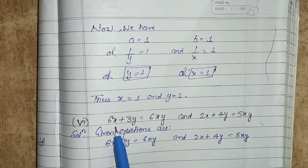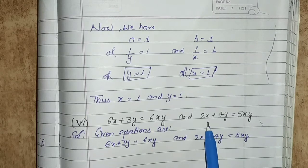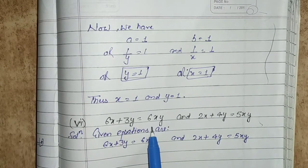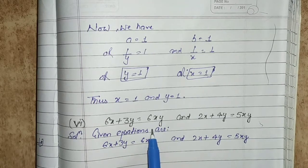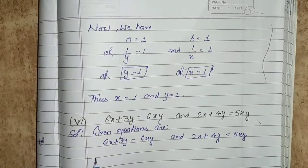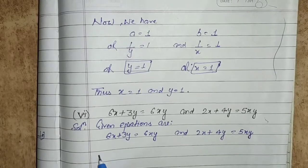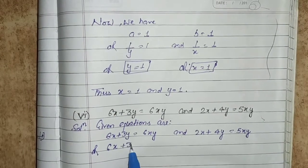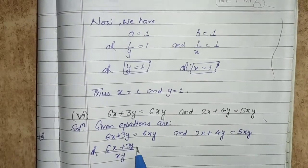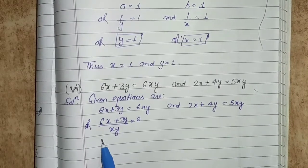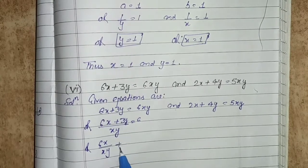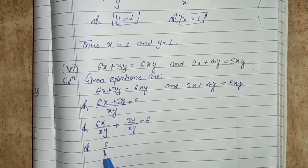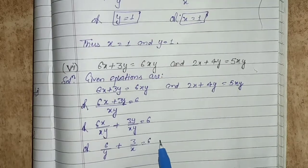The next problem is part number 6. The given equations are 6x plus 3y equals to 6xy and the second equation is 2x plus 4y equals to 5xy. Here the variables appear as multiplications, so we need to transform the equations. Dividing by xy: 6x plus 3y upon xy equals to 6, which gives 6 upon y plus 3 upon x equals to 6. This is equation number 1.